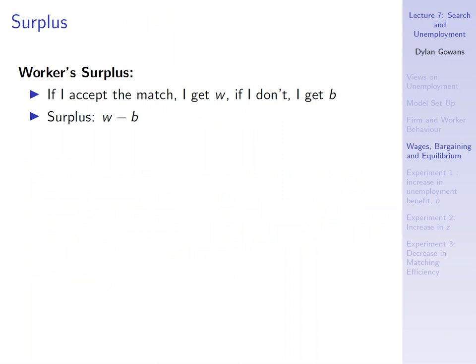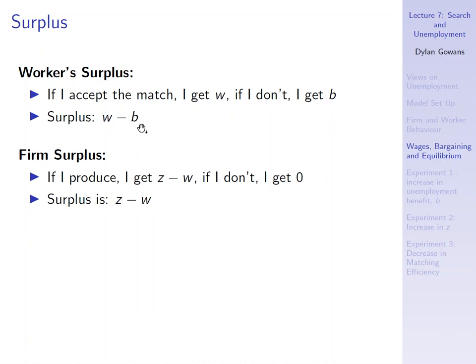What's the worker surplus? If I accept the match I get W. If I don't, I get B, the unemployment benefit. So the worker surplus is W minus B — what I get from the match minus what I would get without the match. What about the firm surplus? If the firm produces it gets Z minus W, that's output minus what it pays the worker, or profits. If it doesn't match it gets 0. So the firm surplus is Z minus W.